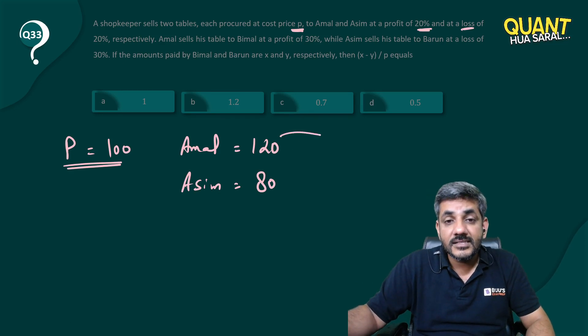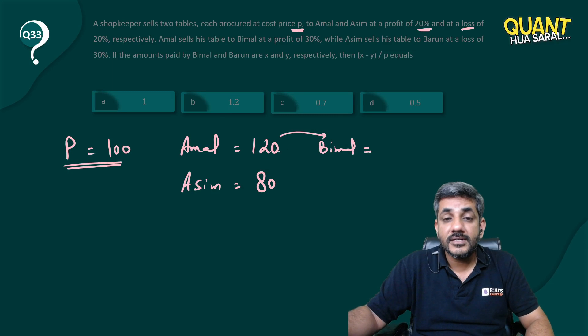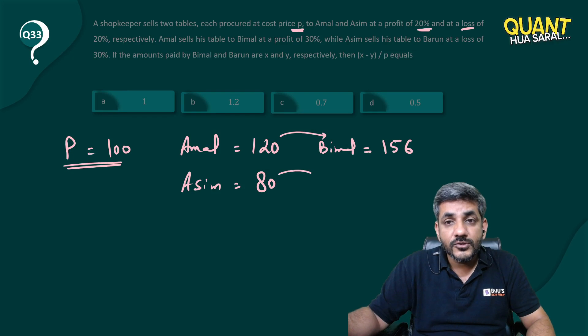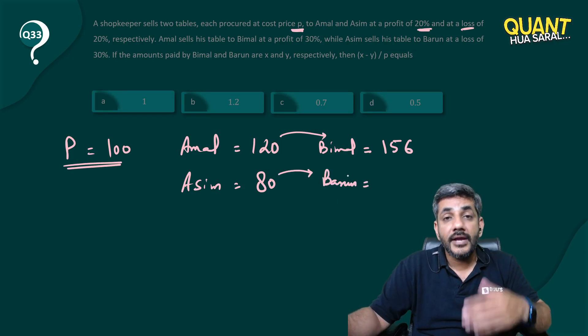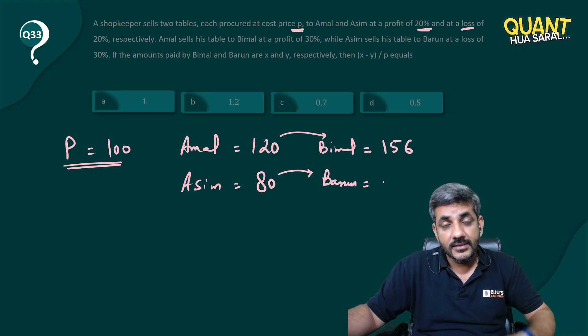Amal sells this table to Bimal at a profit of 30%, so 120 plus 30% is 156. Asim sold this table to Barun at a loss of 30%, so 80 minus 30%, that is 70% of 80, which is 56. These amounts are X and Y. What is the value